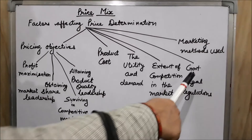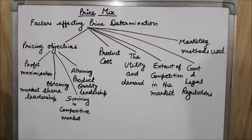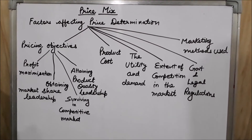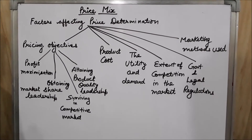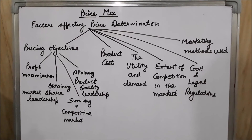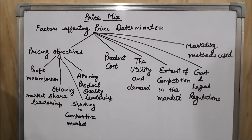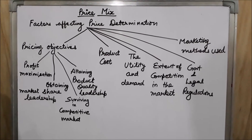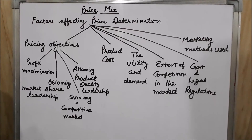The next factor is government and legal regulations. The government interferes in the fixation of price for the protection of public interest and for controlling unfair trade activities. To avoid unfair situations, the government considers some commodities as essential commodities and interferes in their price fixation. Examples of essential commodities declared by the government include medicines, petrol, cooking gas, and food grains. Companies cannot charge high prices for these essential commodities, so the government keeps on regulating their prices.